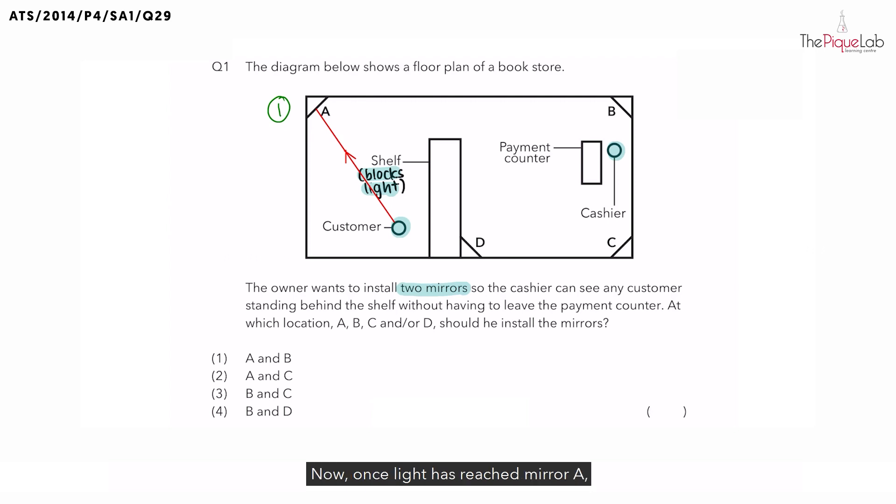Now once light has reached mirror A, light will then be reflected off mirror A. Where should we then place the second mirror?